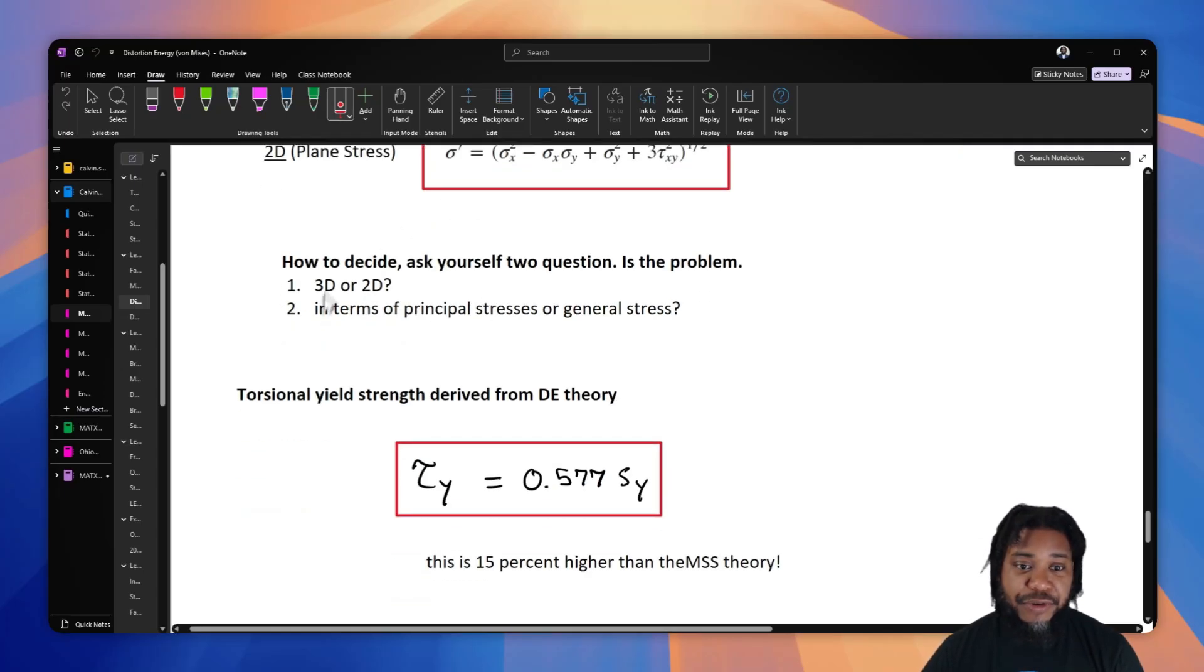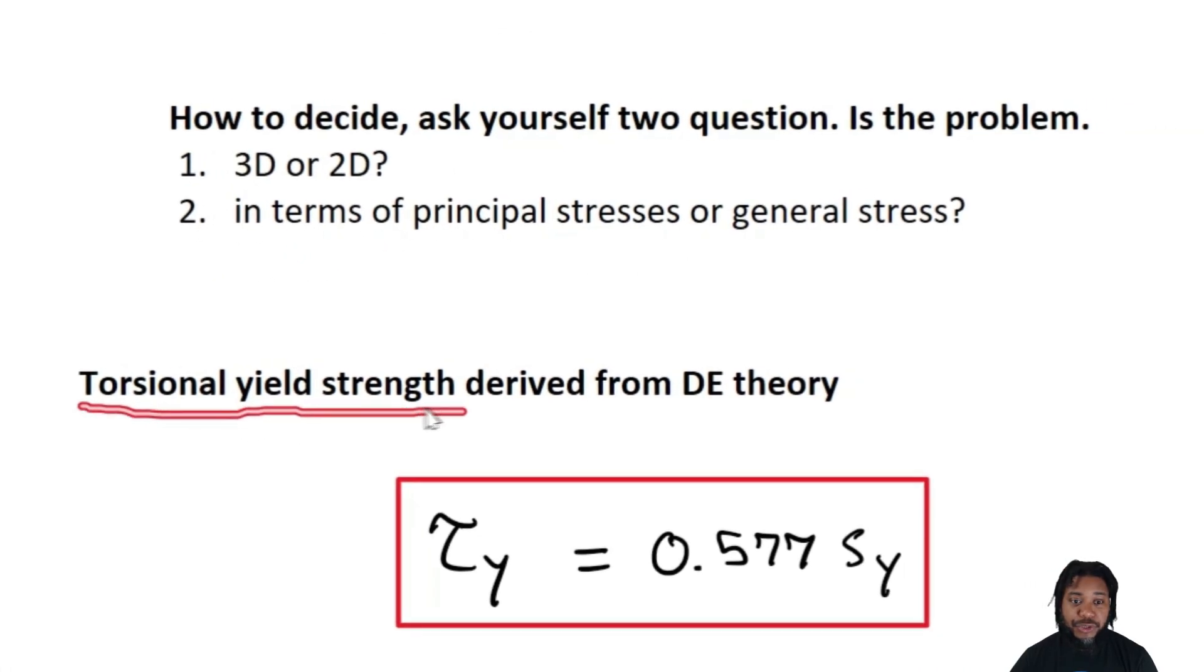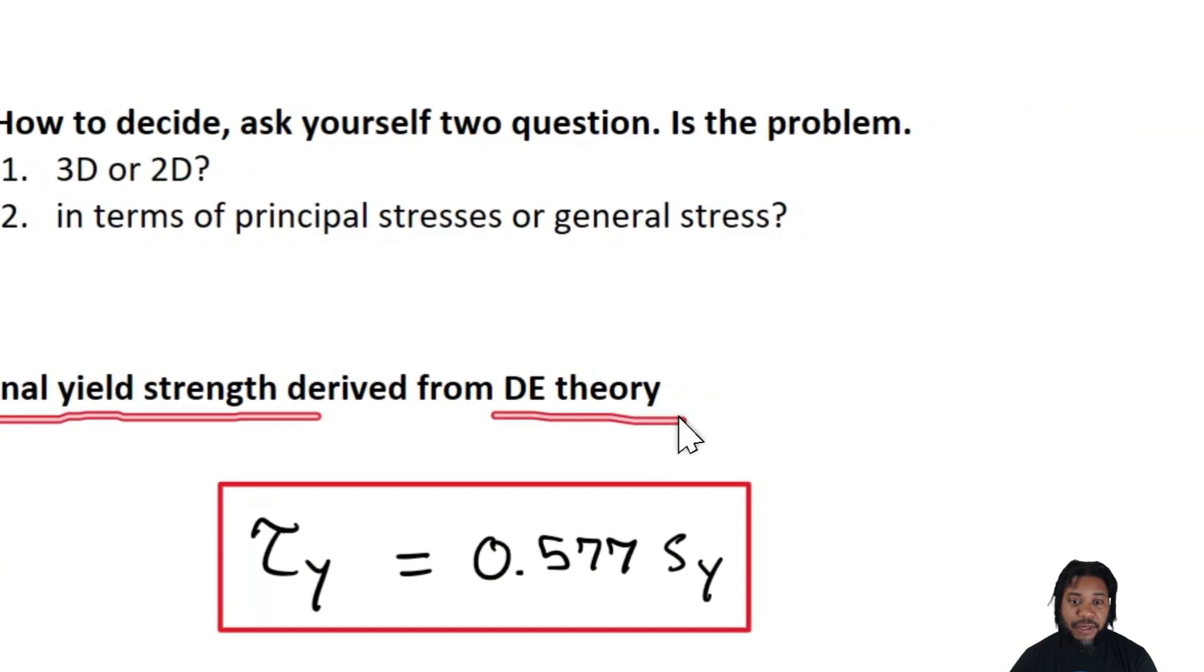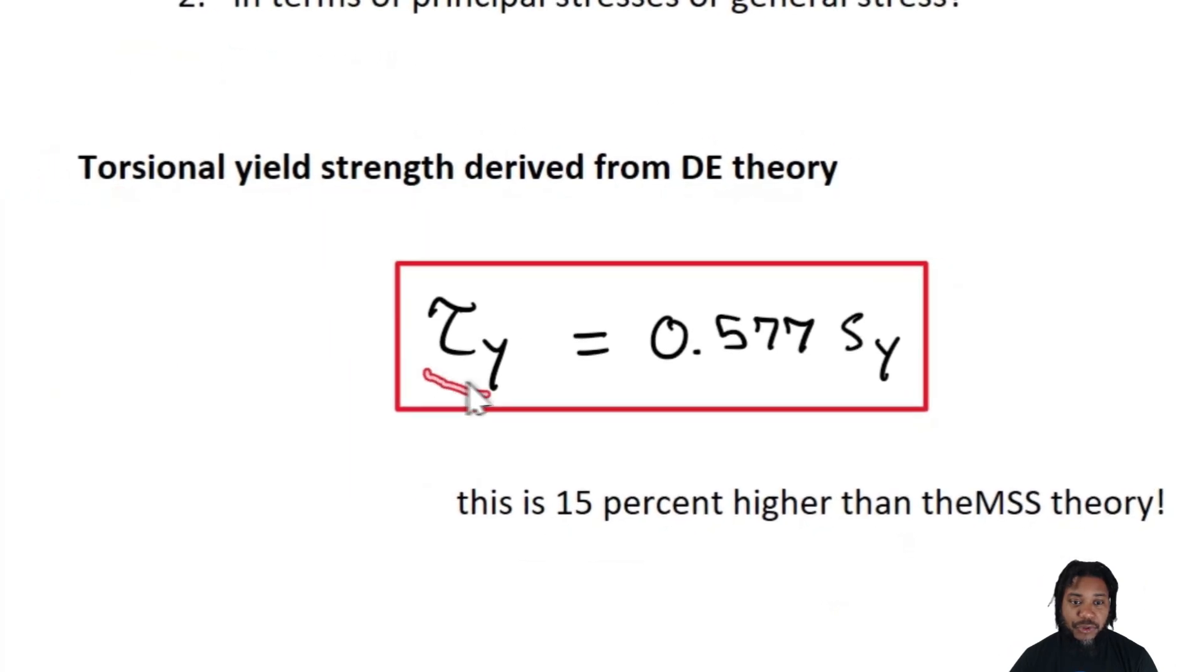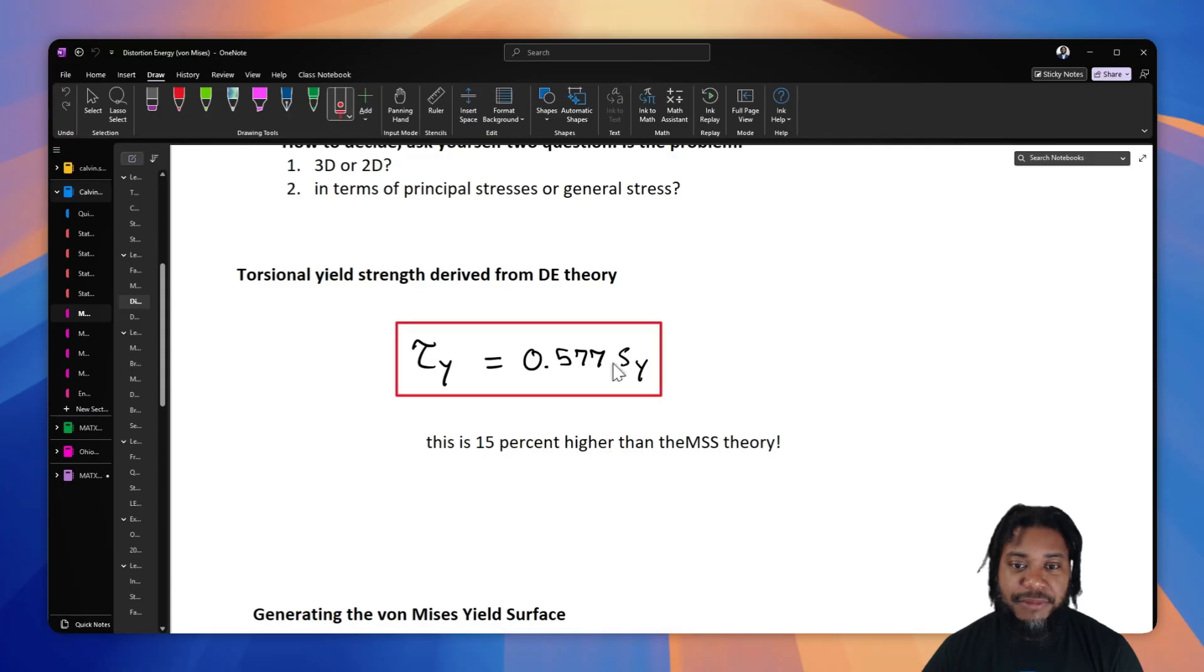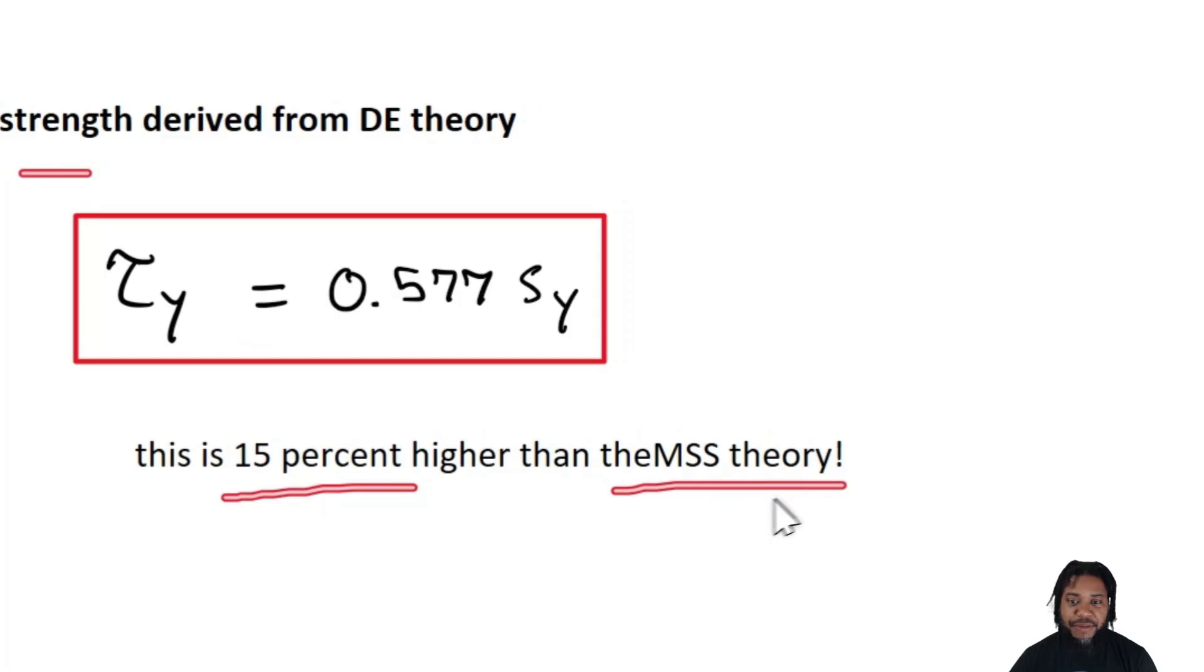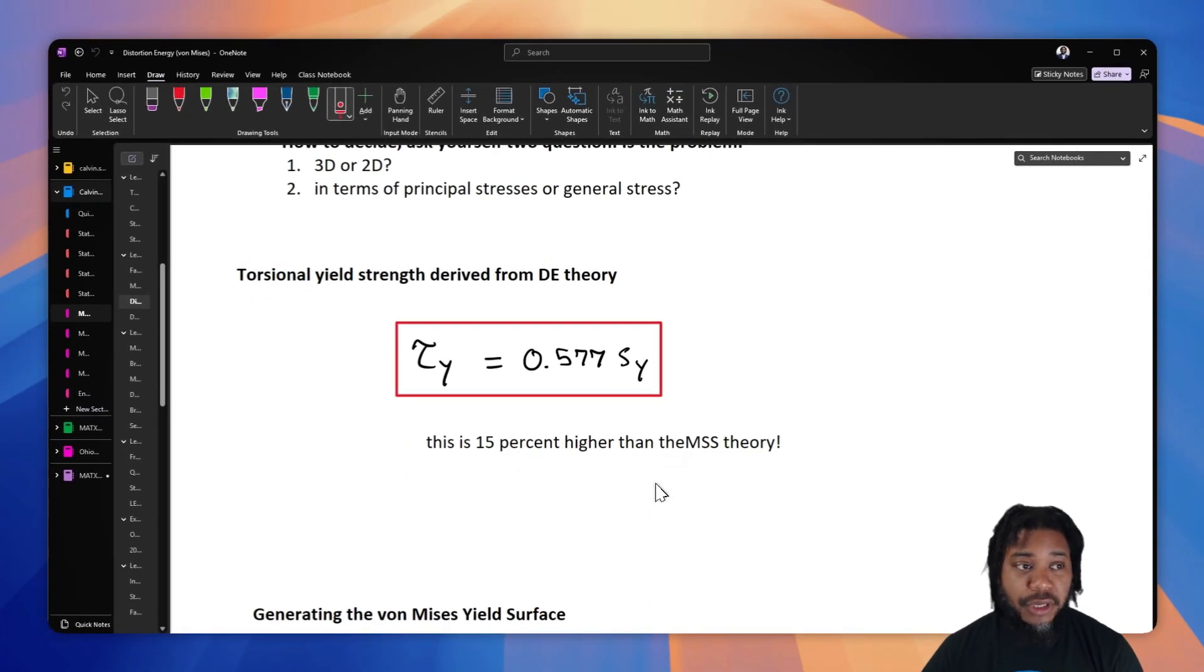And now finally, if we considered a geometry under torsion, we can find that the torsional yield strength derived from the von Mises theory is that the torsional yield stress is equal to 0.577 times the tensile yield strength of a material. So von Mises finds that the torsional yield strength is 15% higher than the maximum shear stress theory.